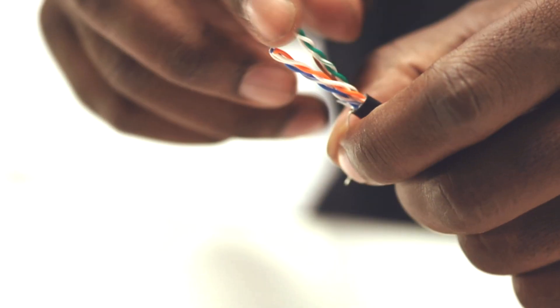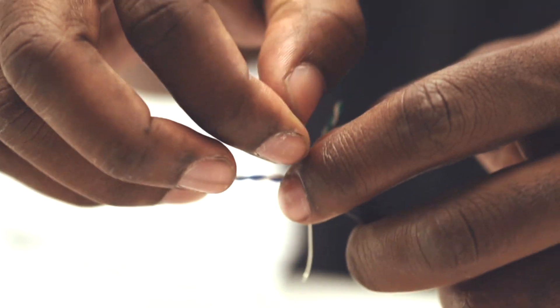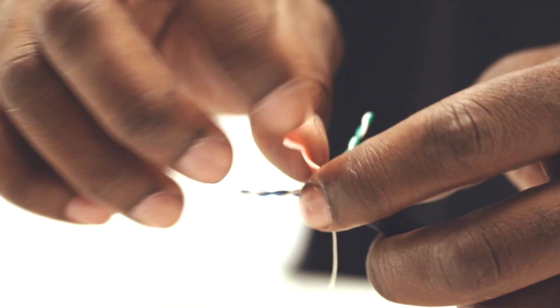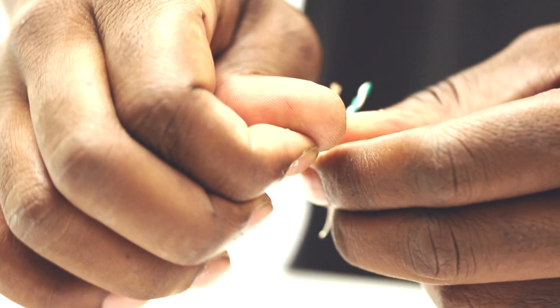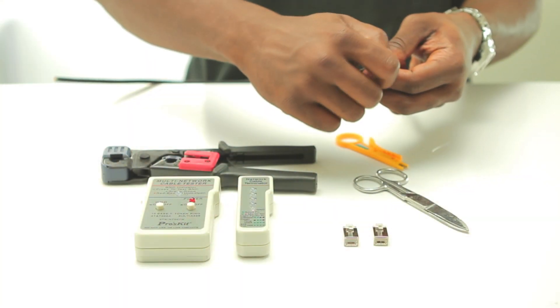Then you will have access to the pairs. There are four pairs. They are color coded. Untwist them and now you will have eight individual wires or conductors.